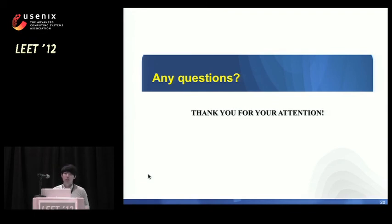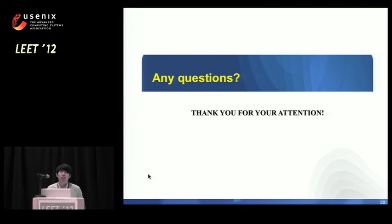An audience member asks: the approach currently protects against known exploits — what will happen when adversaries become aware of these techniques? What can a bad guy do to circumvent the system if they know the phone is protected by RGB Droid? The session moderator suggests taking a break and discussing this question offline, noting the session will resume at 3:40, in approximately 20 minutes.